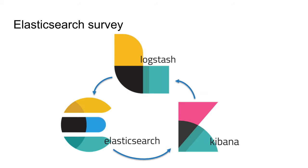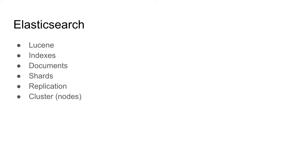Elasticsearch is often mentioned as part of the ELK Stack, which is Elastic, Logstash, and Kibana. Elastic is based on Lucene. You have indexes that contain many documents, and documents have key-value pairs. It's best to have similar key-value pairs — a similar schema — per index, but it's okay to have different ones. It's just more space-efficient and faster to have similar documents.